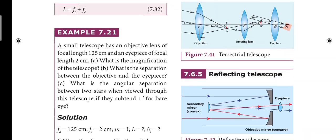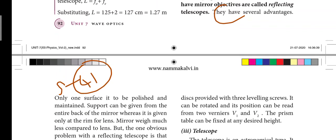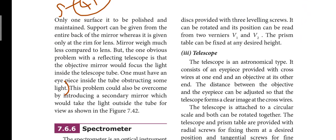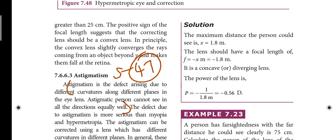Next: advantages of reflecting telescope, page number 92. They have several advantages — next page. That is the forty-first short answer. Next: last question — astigmatism. Starting line 1, 2, 3, 4th line: equally well. That is the forty-seventh short answer, 2 marks. Next: lesson 8 in the next video. Thanks for watching.